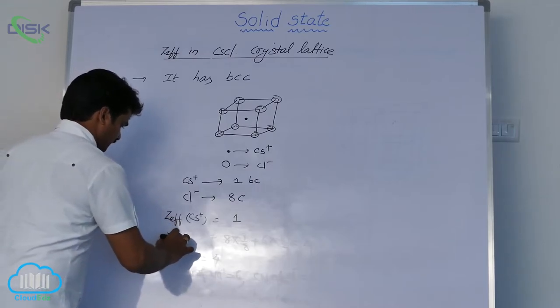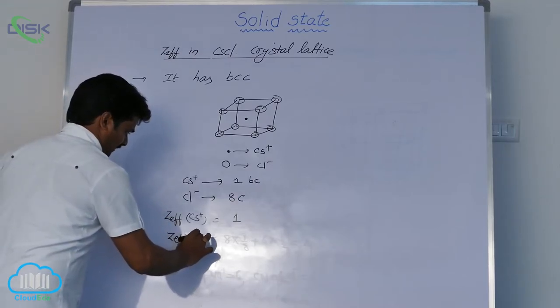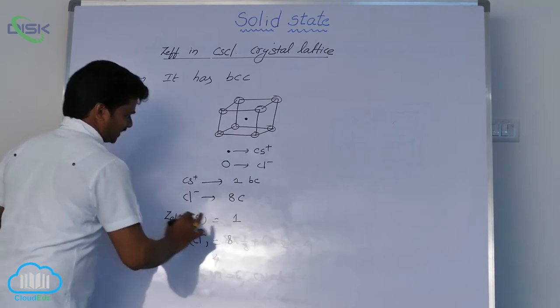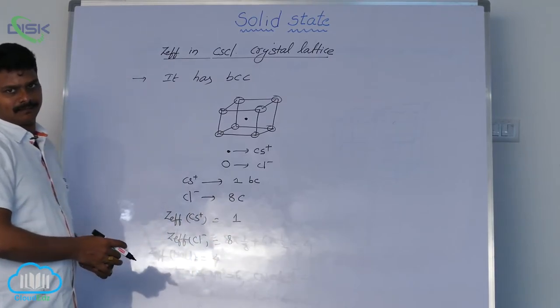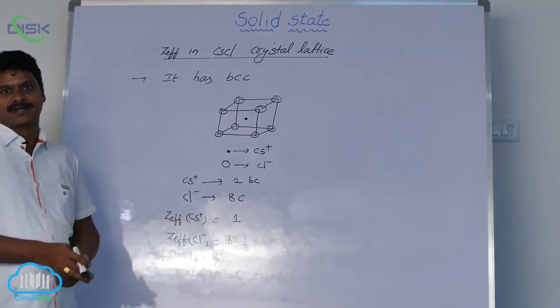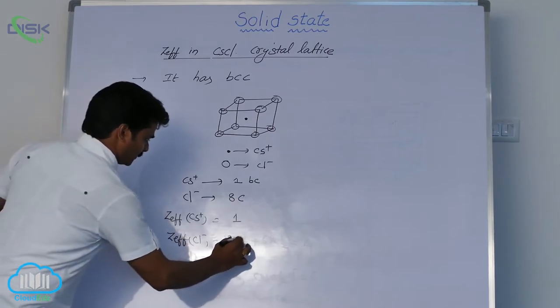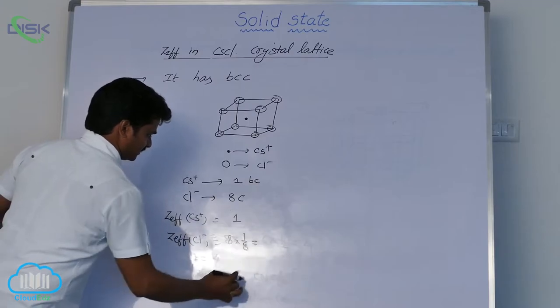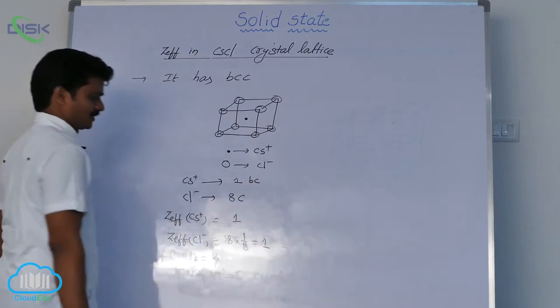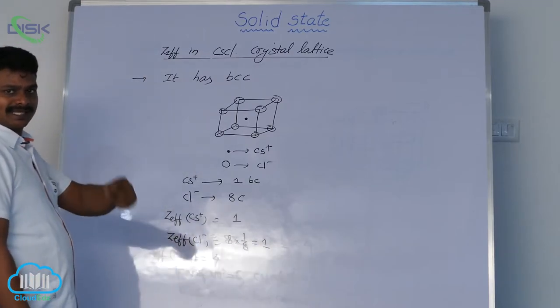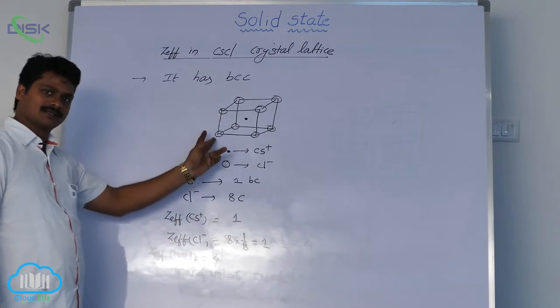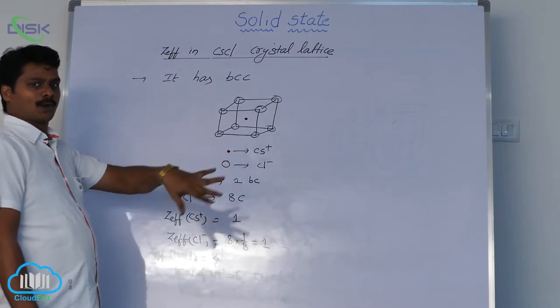For chloride ion, this is the chloride ion present at the corner. The corner atom is shared by eight unit cells, so it is equal to one. So a unit cell of cesium chloride contains one cesium ion and one chloride ion.